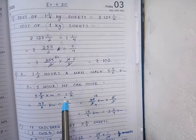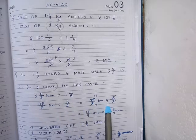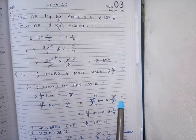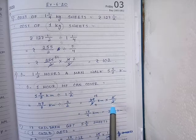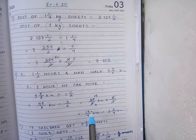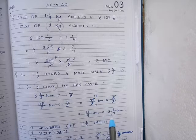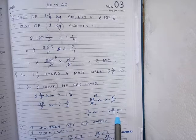These are mixed fractions. Transform them to improper fractions. After that, in place of division, write down the multiplication sign and the reciprocal of the second fraction, which is equal to 2 by 3. Then cancel the terms and I am getting 15 by 4 kilometres. It is in improper fraction, so you have to transform it to mixed fraction: 3 whole number 3/4 kilometres.